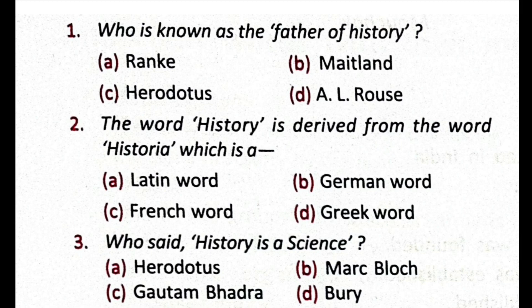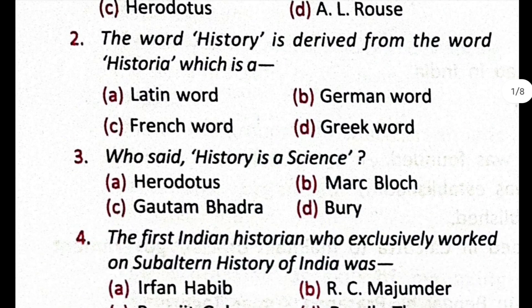Who is known as the father of history? 4 options are given. The correct answer is option C, Herodotus. Question number 2: the word 'history' is derived from the word 'historia'. 4 options are there and the correct option is D, Greek word.